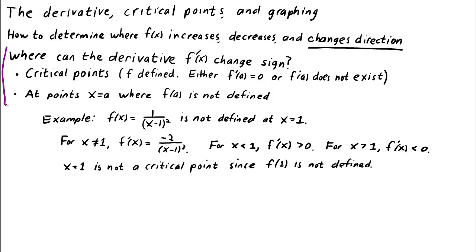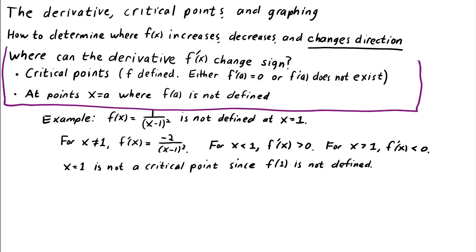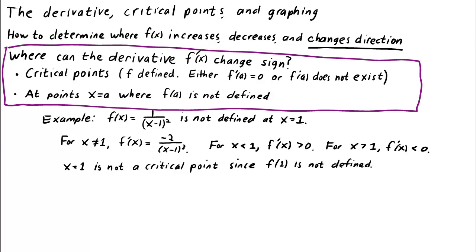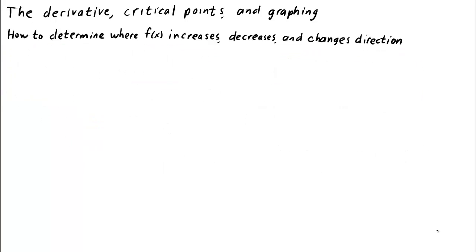In summary, the derivative can change sign at critical points — points x equals a where f of a is defined, but either f prime of a equals 0 or f prime of a doesn't exist — or at points where f of a is not defined. Since the derivative can change sign only at critical points and points where f isn't defined, there's a simple way to find the intervals where f increases and decreases.